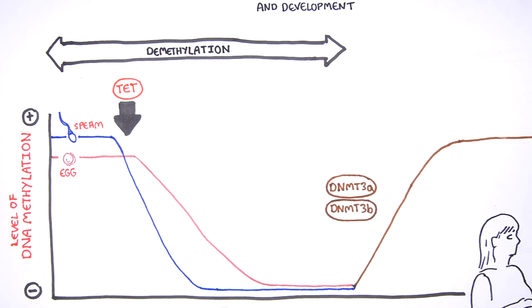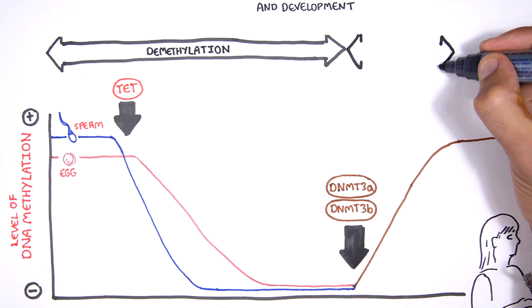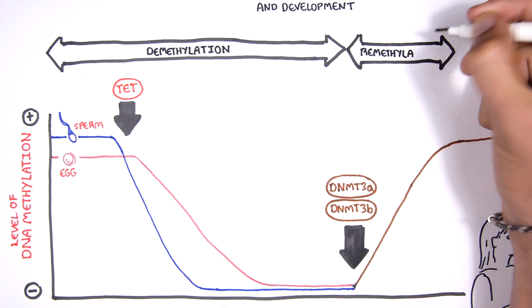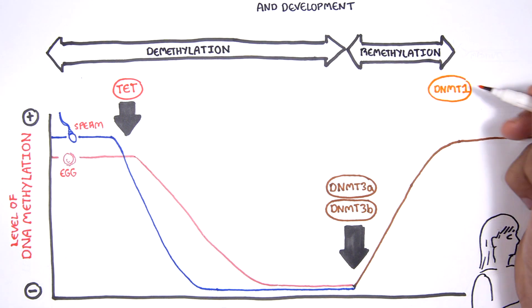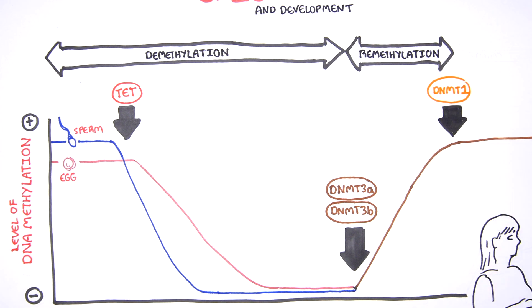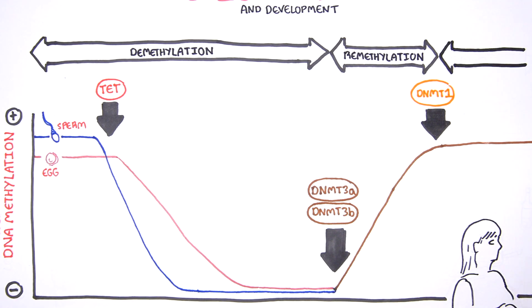DNMT3A and DNMT3B are responsible for de novo DNA methylation of embryonic cells. And DNMT1 is responsible for maintaining the DNA methylation state in somatic cells during each cell division.